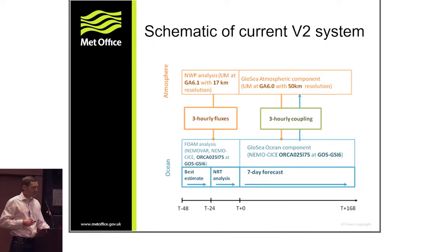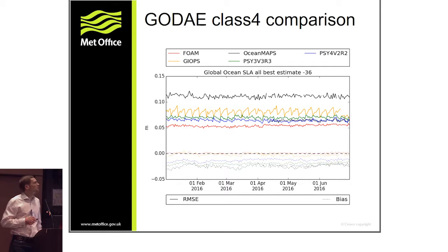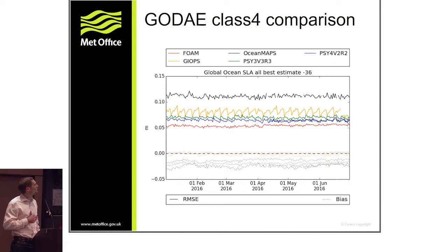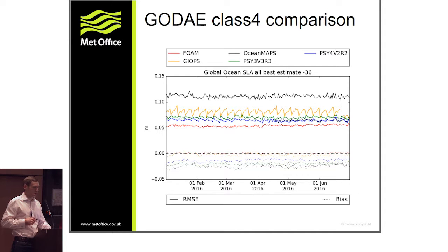Turning to product quality for FOAM: we've already heard a bit about Class 4 diagnostics, and I don't want you to read too much into a comparison like this — Class 4 is arguably a blunt tool for addressing product quality. But it certainly illustrates that the FOAM system, shown in red, is a very good ocean-only analysis system. We have confidence in the quality of the analysis we're using to initialize our coupled model. This example shows sea level anomaly for the analysis.